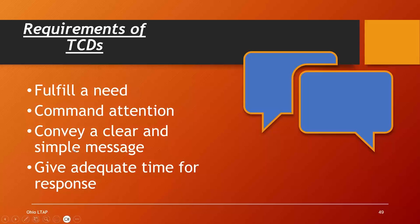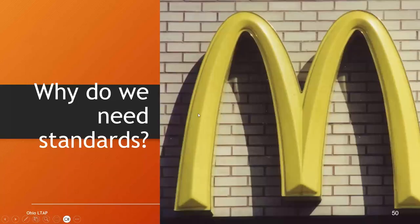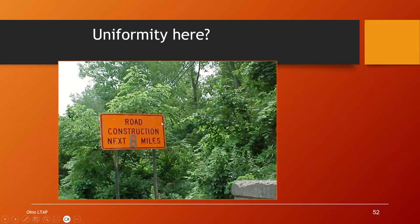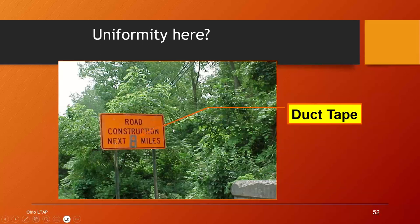We're trying to establish uniformity through standardization for all traffic control. When we do that, we promote better recognition and understanding, more consistent interpretation, rapid driver response, motorist respect, and even reduced traffic control costs. Here are some old signs from the ODOT archives showing duct tape being used to spell out a message, or electrical tape that's fallen off, or duct tape covering up a left turn arrow — that doesn't command a lot of respect. Those are very old pictures and we don't see that anymore. We're trying to establish uniformity in all of our devices.